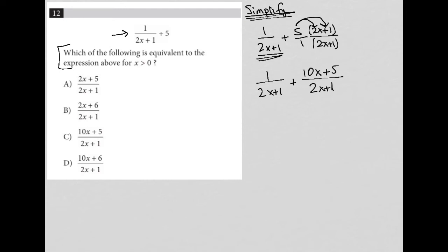Now I have a common denominator, which means I can add the fractions together and just keep the denominator. My common denominator is 2x plus 1, so that remains. And then my numerators, I'd have 10x, and then I have this 1 plus 5 here, which gives me a plus 6.